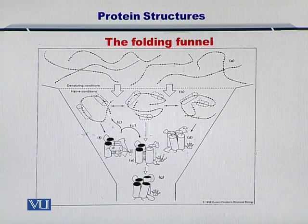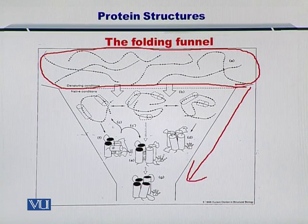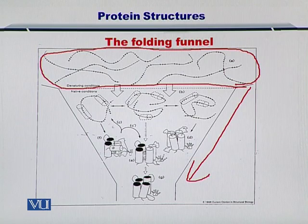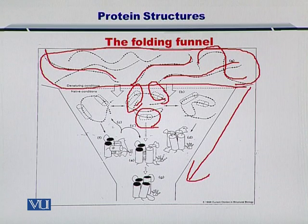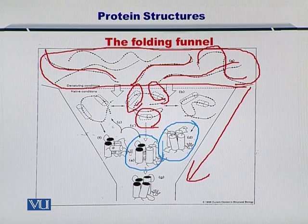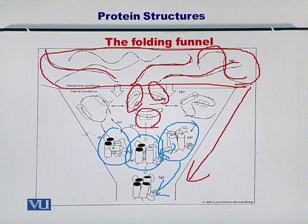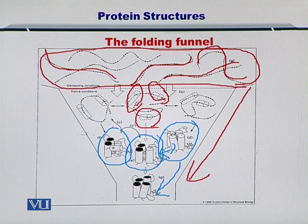If you look at this figure, it shows you a funnel. The options an unfolded protein has get reduced as it takes on more and more complex structures. Initially these chains are just linear polypeptide chains comprising amino acids. Then they take secondary structures, and once the secondary structural form is adopted, these secondary structures come together and make more complex structures. These proteins can also make complexes and eventually arrive at the final structure. This is called a folding funnel, wherein an unfolded protein has a lot more choices as compared with a folded protein.